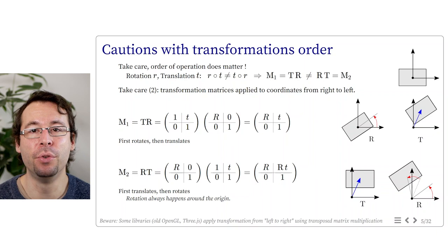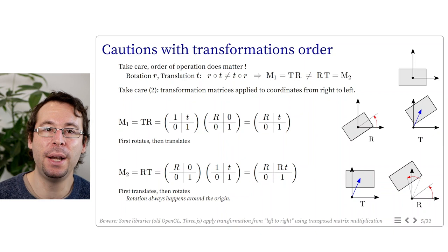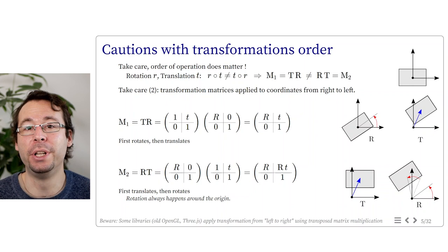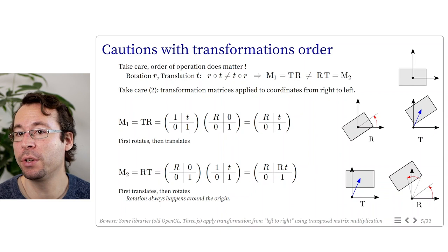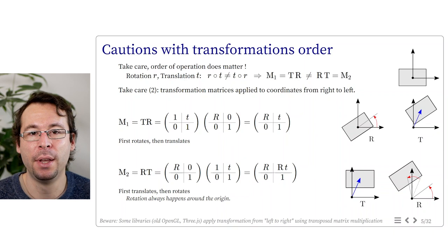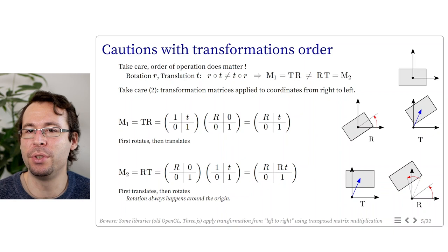The geometric result shows the rectangle in a different final position depending on the order. This can be understood by the fact that linear operations like rotation always happen with respect to the origin, not with respect to some fixed point on the object. Beware that some libraries use an opposite convention, applying successive transformations from left to right — they transpose the matrix before multiplying. This can look simpler as all transformations are applied with respect to the local coordinate of the shape. This was used in old OpenGL versions 1 and 2, and is still used in the JavaScript library three.js.